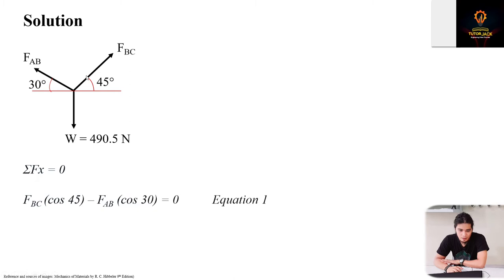For summation of forces along the x-axis, only two forces are available. The x-component of FBC is cosine 45 (adjacent over hypotenuse), and similarly for FAB it's cosine 30. FAB is negative because it goes in the negative direction to the left, while FBC goes to the right in the positive direction, equals zero. We'll call this Equation 1.